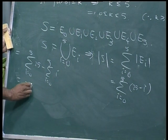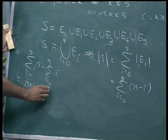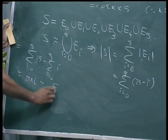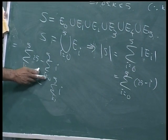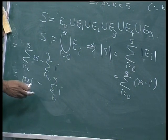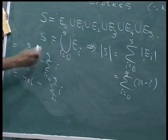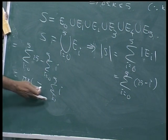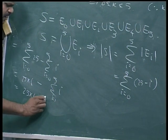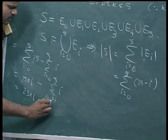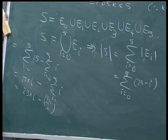This equals 25 times 6 minus the sum of i from 1 to 5 — we can start from 1 since the i equals 0 term contributes nothing. Using the formula n(n+1)/2, the sum of 1 to 5 is 5 times 6 divided by 2 equals 15. So mod of S equals 150 minus 15, giving the number of elements in S when mod of a minus b is less than or equal to 5.